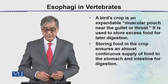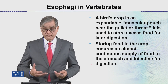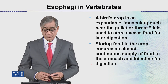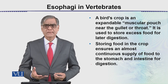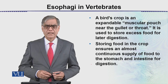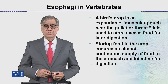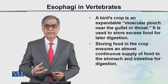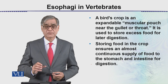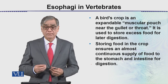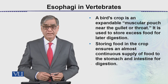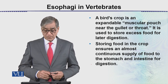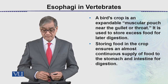A bird's crop is an expandable muscular pouch near the gullet or throat. It is used to store excess food for later digestion. Storing food in the crop ensures an almost continuous supply of food to the stomach and intestine for digestion.